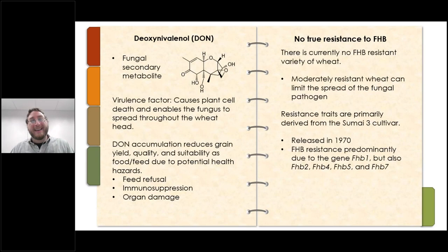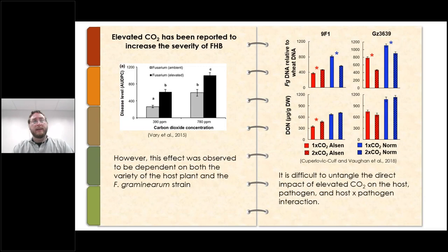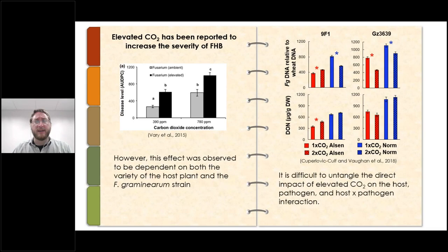There is actually no true resistance to Fusarium head blight. The best resistance would be considered moderately resistant; only specific resistance traits limit the spread of the fungal pathogen in wheat, primarily derived from a single cultivar called Sumai 3. A co-worker of mine, Dr. Martha Vaughan, previously looked at the effects of elevated CO2 on the severity of Fusarium head blight, examining a mildly resistant and susceptible cultivar with two different fungal strains. She found an increase in DON production per biomass and changes in fungal biomass, with a significant impact of primary metabolism on both systems.